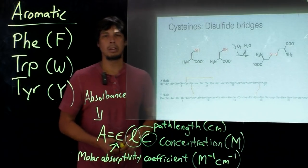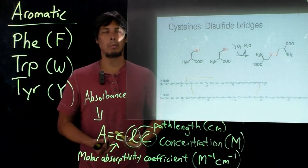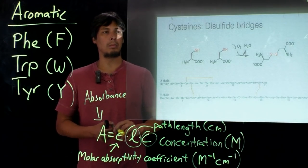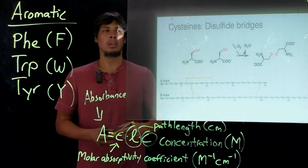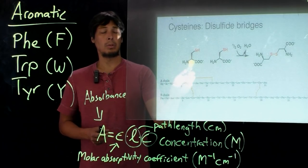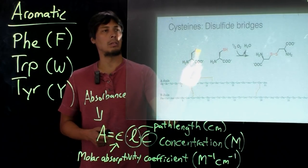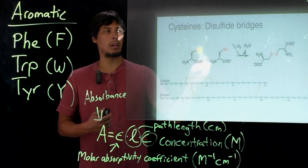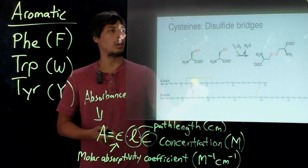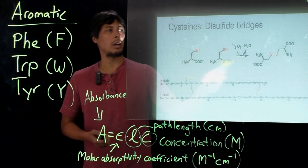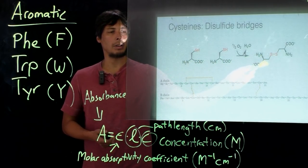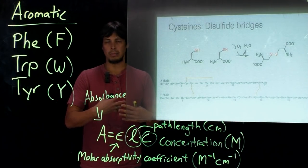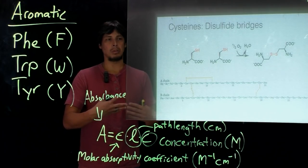Finally, we can predict if there are possible disulfide bridges in the protein. Disulfide bridges form between cysteines, specifically between two cysteines. This can be catalyzed, or this often happens just in air. You form from two thiols what's called a disulfide. Within a protein, cysteines can form crosslinks with each other between two cysteines.